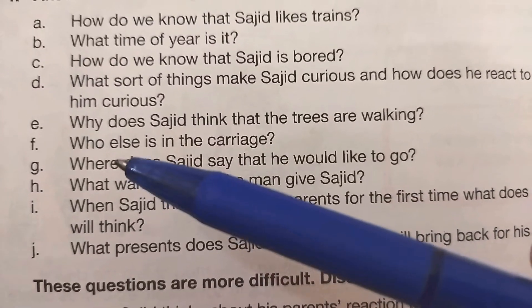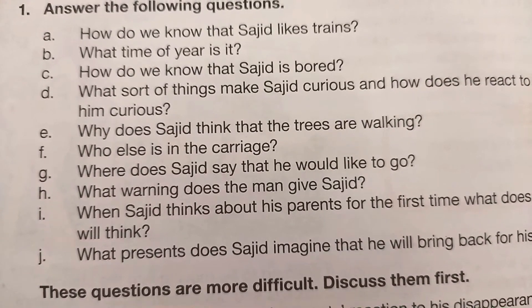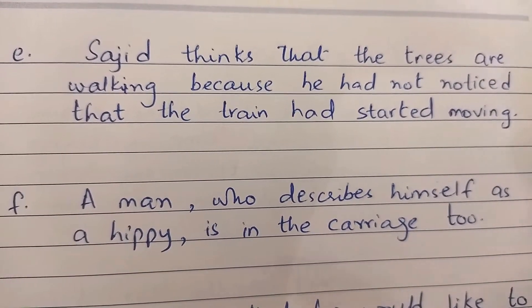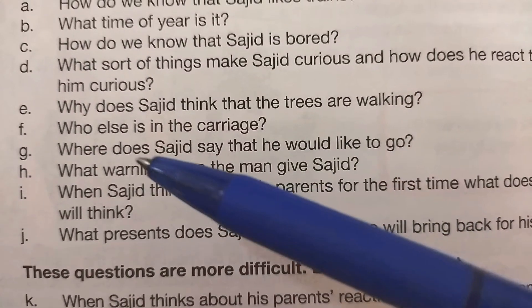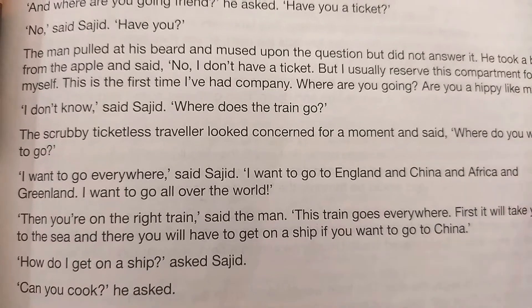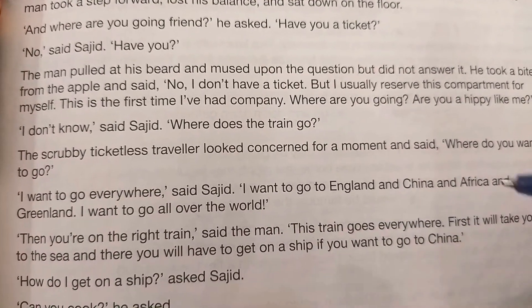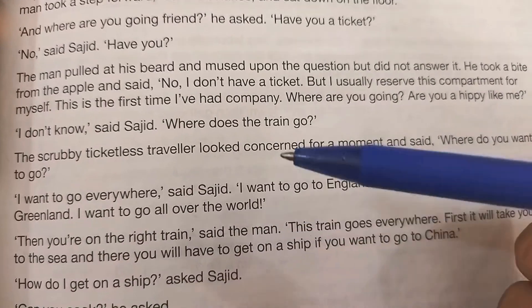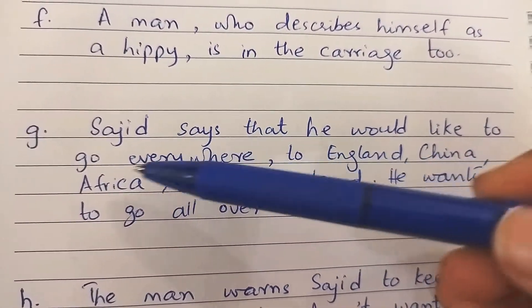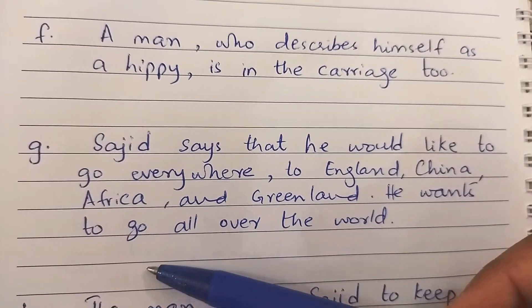Part F asks: 'Who else is in the carriage?' There was a man who describes himself as a hippie in the carriage too. Part G asks: 'Where does Sajid say that he would like to go?' On page 41 you find the answer: 'I want to go everywhere,' said Sajid — to England, China, Africa, and Greenland. He wants to go all over the world.